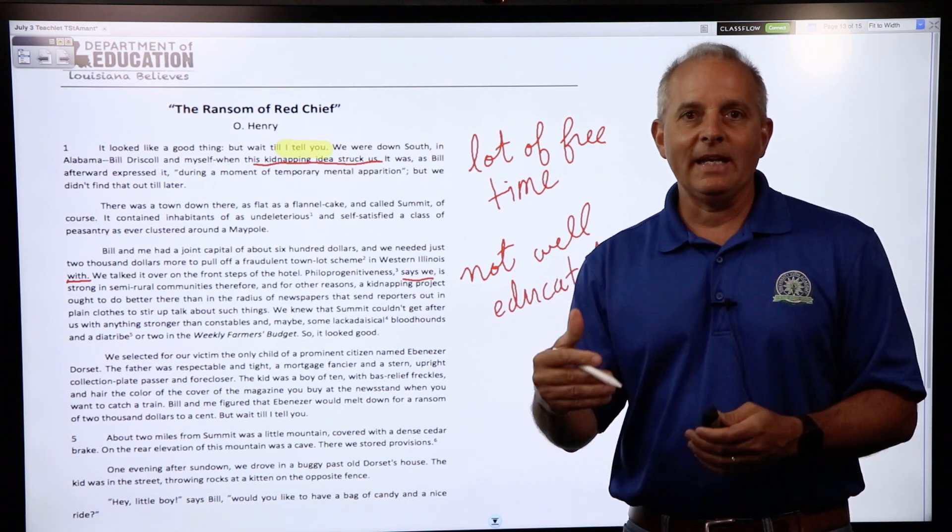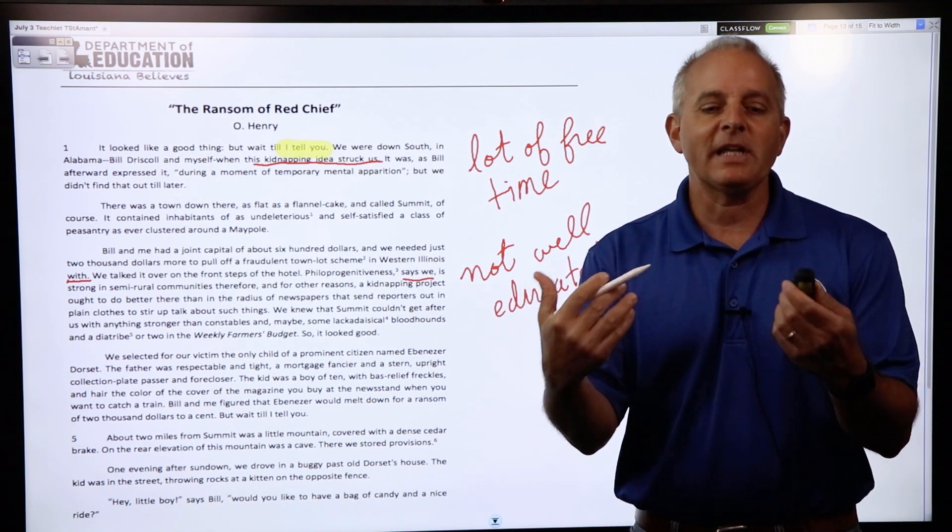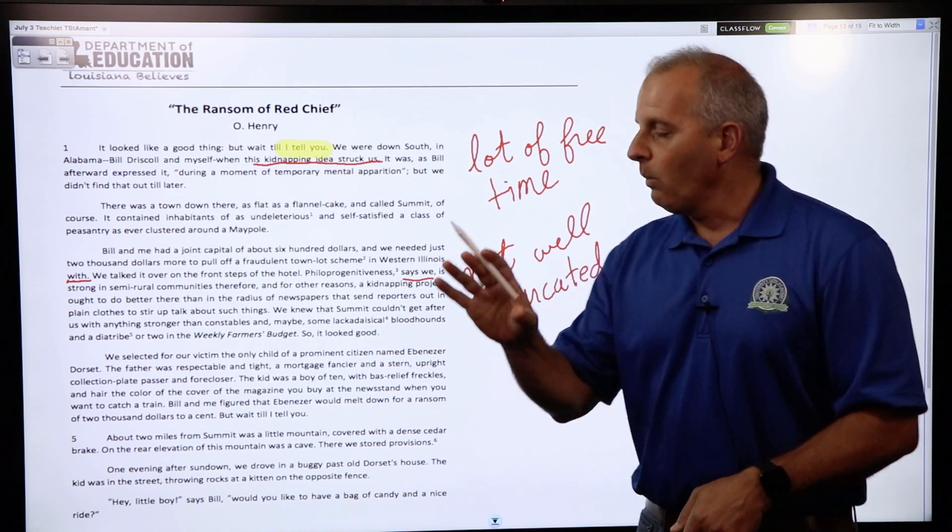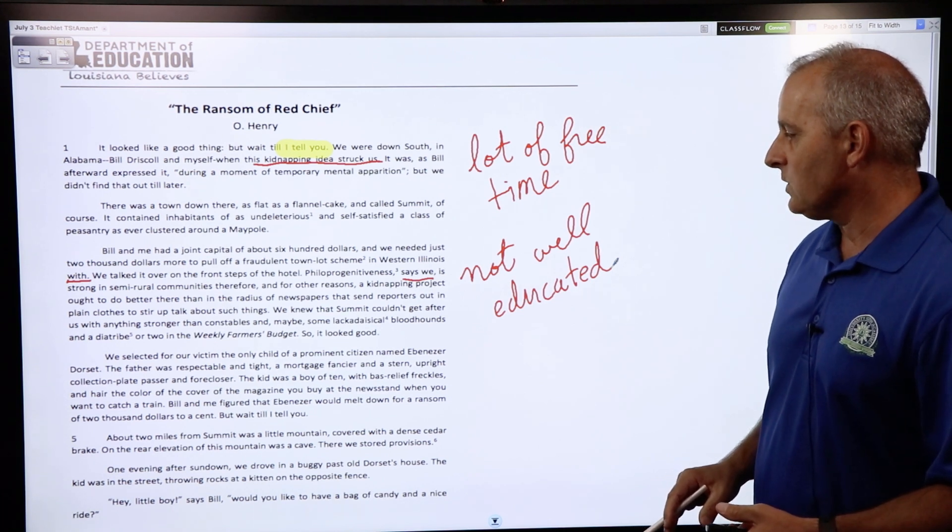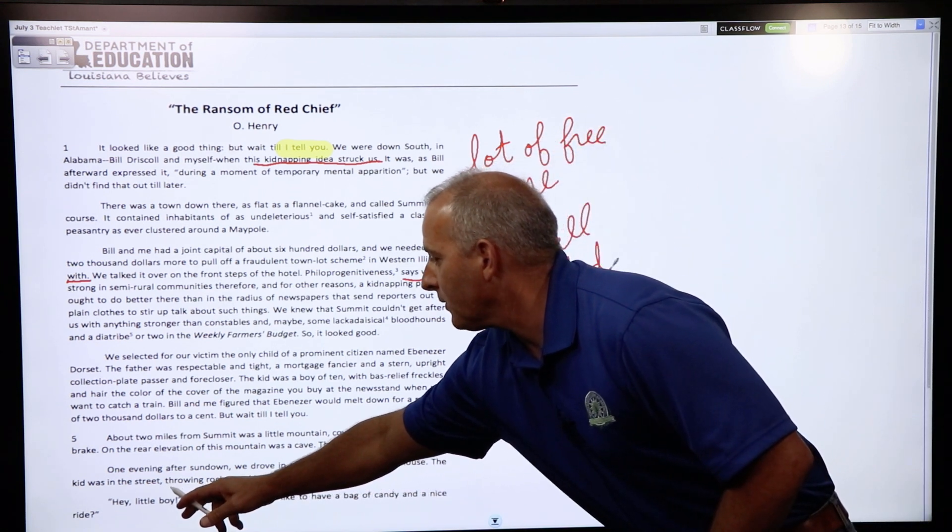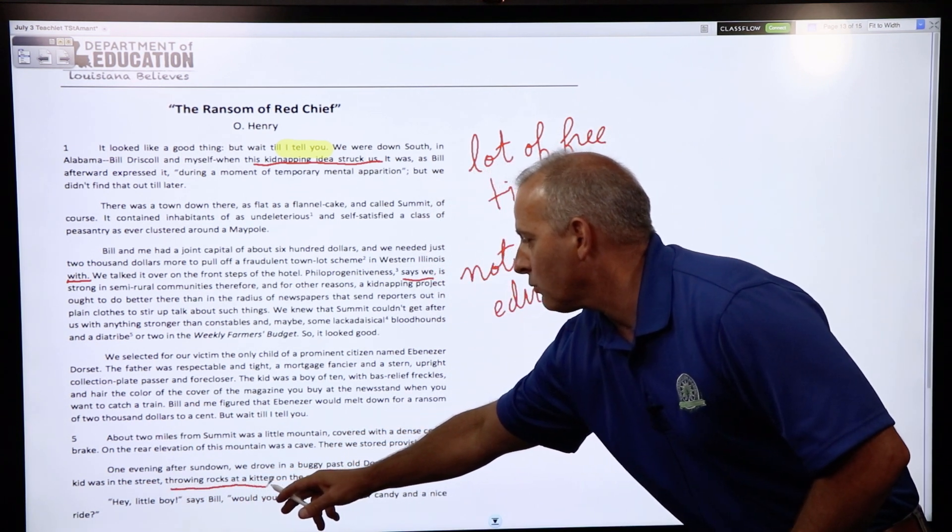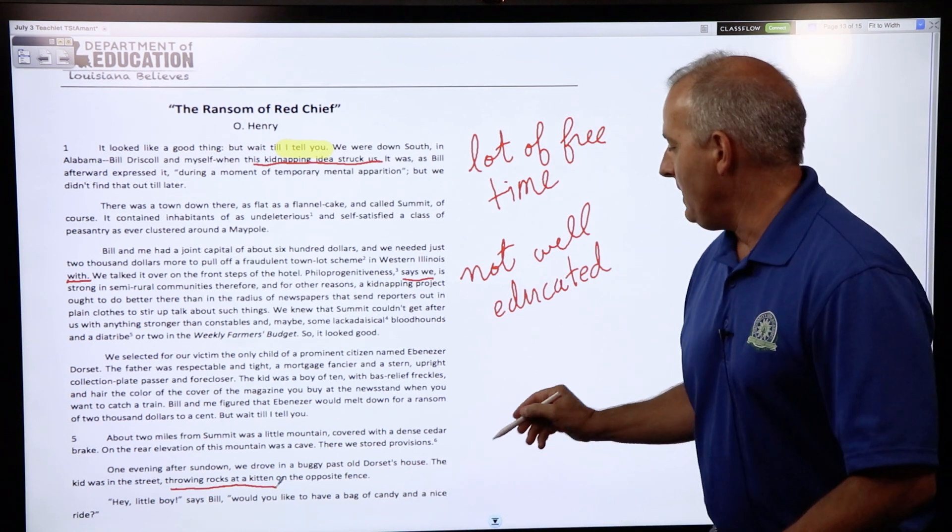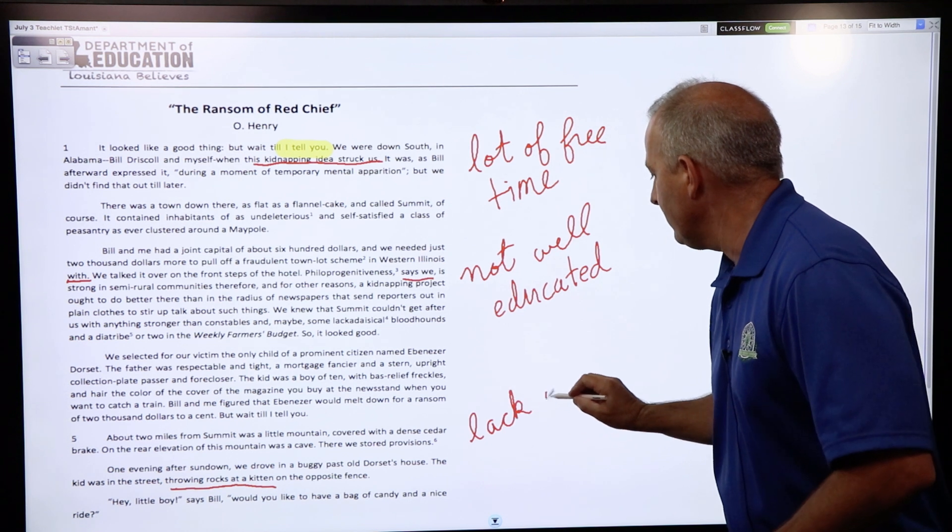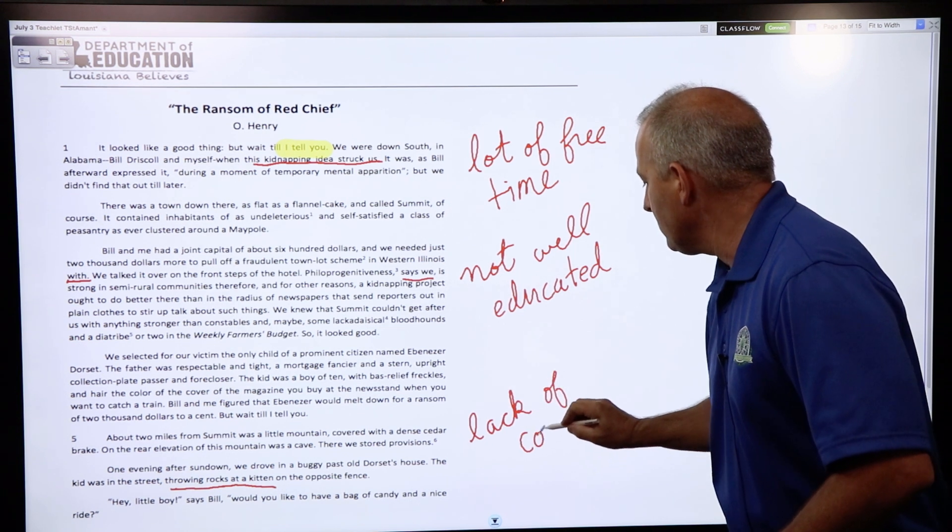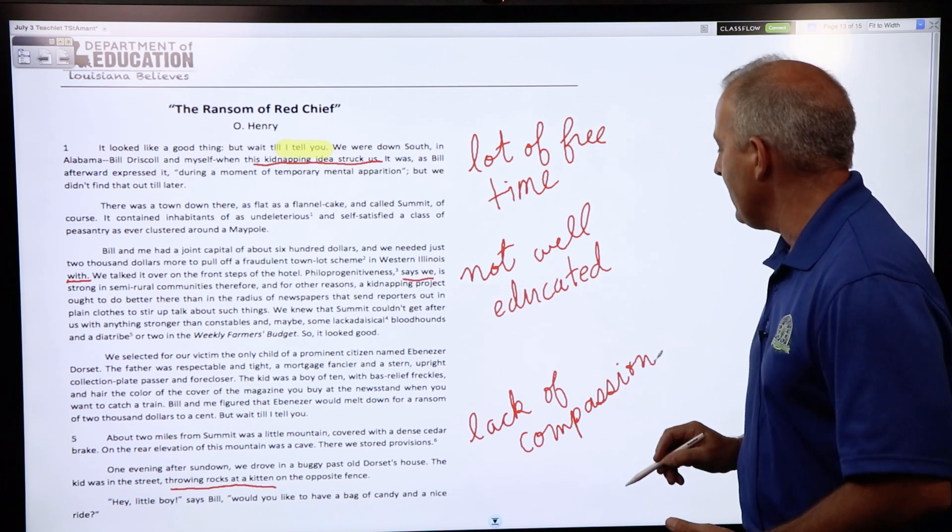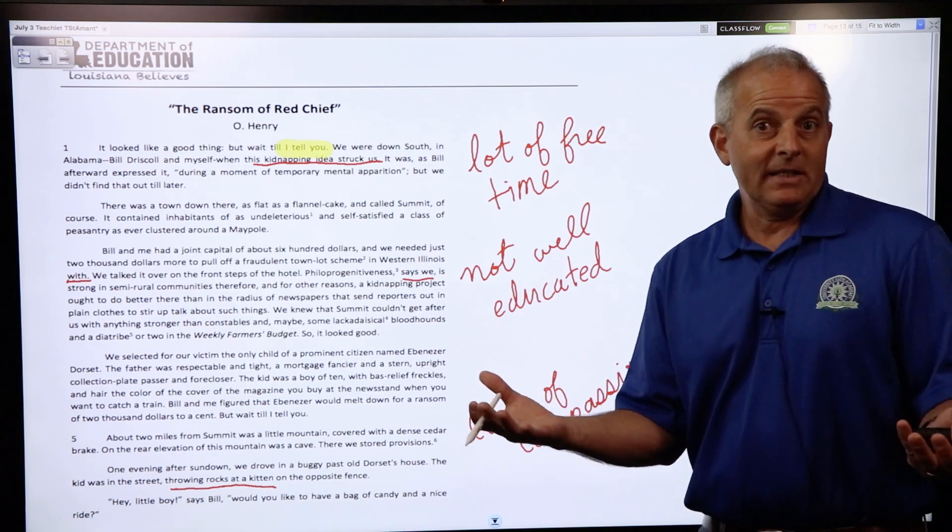One final thing toward the bottom: we can also underline this section right here. The narrator and his partner were throwing rocks at a kitten. Now to me, that shows a pretty severe lack of compassion. So we've got three different things right here that we can say about the narrator and his partner, about his character.